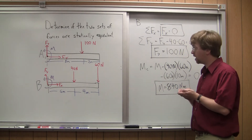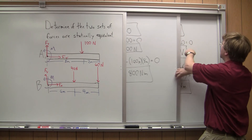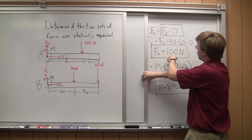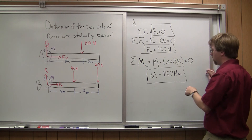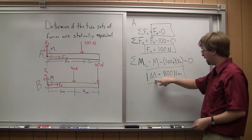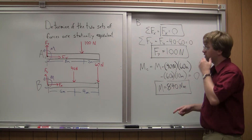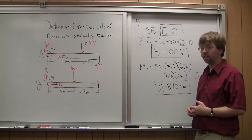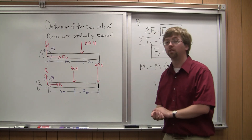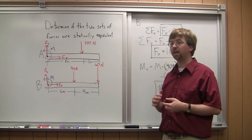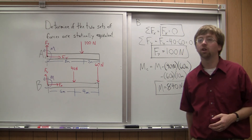Comparing the reaction forces: in A, Fx equals zero; in B, Fx equals zero — those match. Fy is 100 Newtons in both cases — those match. However, the moments differ: beam A has 800 Newton·meters at the base, while beam B has 840 Newton·meters. Since the moments are not equal, these two force systems are not statically equivalent. All reactions must be the same for static equivalence, so the problem is solved.